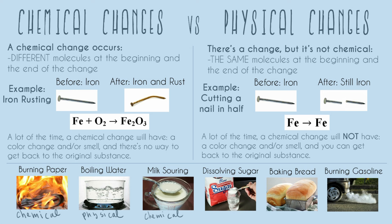Fourth, dissolving sugar — I think this is the one that students have the most trouble with. Do we have a color change? Kind of — sugar is white, water is clear, if you dissolve it it's clear, but it's not a huge color change. Is there a smell? Not really — it kind of smells sweet, but it's not the smell of a change. So we have to really rely on the third signifier: is there a way to get back to the original substance?